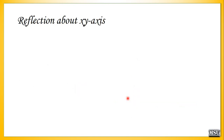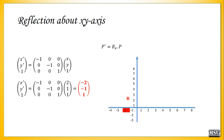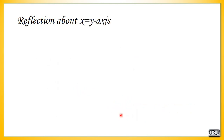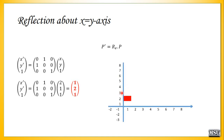For reflection about the origin, we change both axis sign values: x' equals minus x and y' equals minus y. So the point is now (-2, -1), located at the third quadrant. For the x equals y axis reflection, we interchange the values: x' equals y and y' equals x. The point becomes (1, 2). This reflection is about the x equals y line — 1,1; 2,2; 3,3; 4,4 — that is the x equals y line.